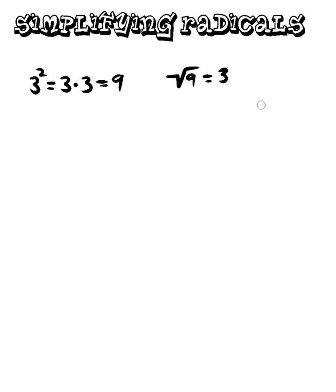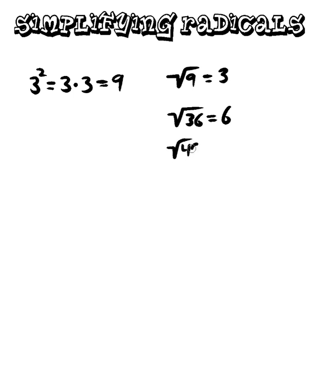What we're trying to figure out today is how do you simplify a radical? A lot of times when you take a radical, you get a simple number like the square root of 9 equals 3, because 9 is a perfect square. Our goal today is to simplify radicals by looking for perfect squares. If I type the square root of 36 into my calculator, I get 6. Square root of 49 gives me 7, and the square root of 16 gives me 4.